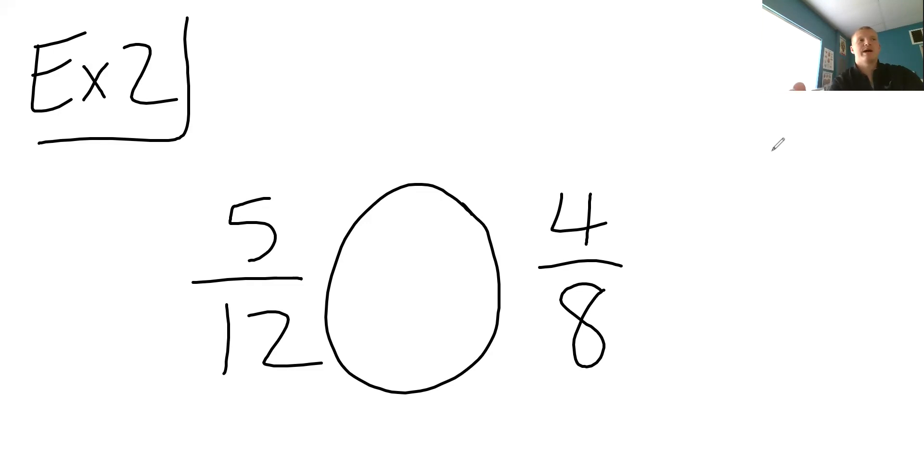Because 6 over 12 would be one half. Right. And so another way I could do this is make them both equal to the same number. So 12 and 8. Let's turn 8 into... Actually, I'm gonna have to do that to both of them. So if I multiply this by... They're both... Something they both have in common is 24.